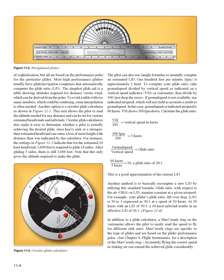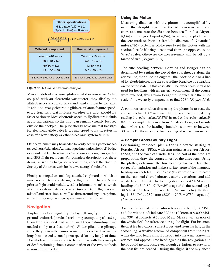Accurately flying the correct speed in sinking air can extend the achieved glide considerably. Many models of electronic glide calculators now exist, often coupled with an electronic variometer, displaying the altitude necessary for distance with wind input by the pilot. Many electronic glide calculators feature speed-to-fly functions and audio indications so the pilot can remain visually focused outside the cockpit. The pilot should have manual backups for electronic calculators in case of low battery or other failure.